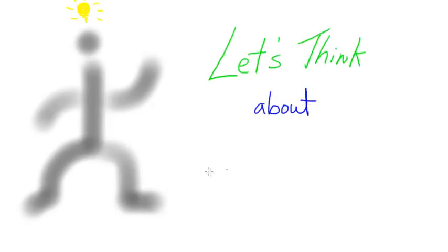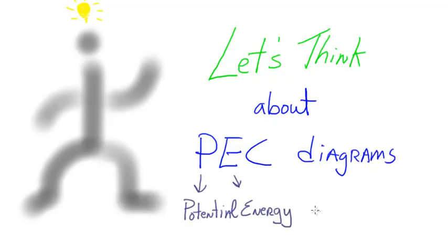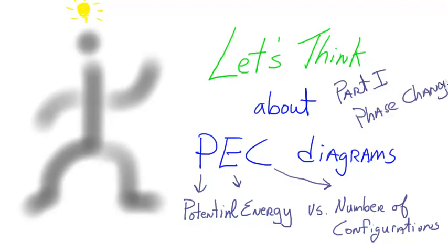After watching this video, you should have a fundamental understanding of the two main factors you have to pay attention to when you want to explain or make predictions about chemical or physical changes in a system. I'm going to first focus on physical change in this video and discuss phase changes. To illustrate this thinking, I'm going to introduce you to a diagram called the Peck Diagram, which takes into consideration these two factors.